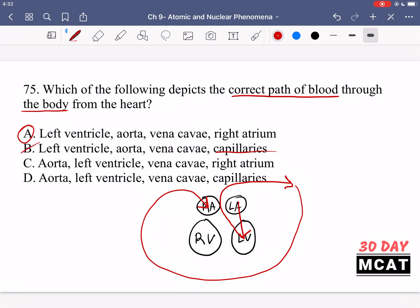Option C is saying it would start in the aorta, then go to the left ventricle. No, that's incorrect. And then D is also incorrect. It's the left ventricle which pumps the blood into the aorta, and you cannot switch these two around. That doesn't make sense.